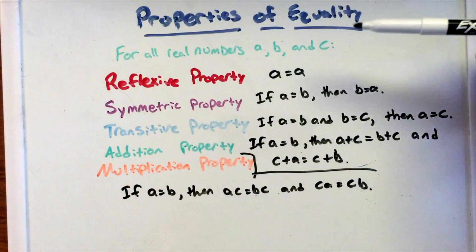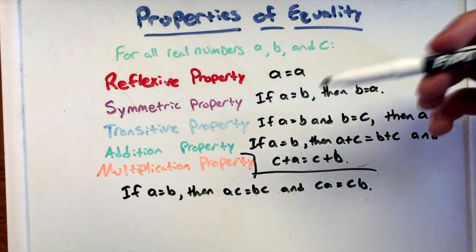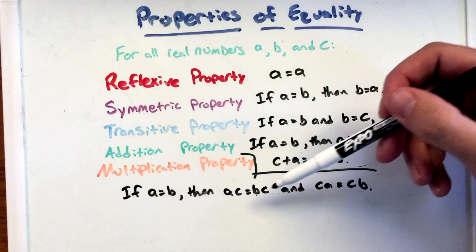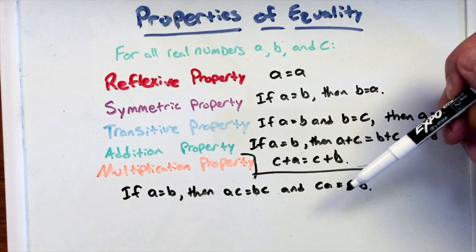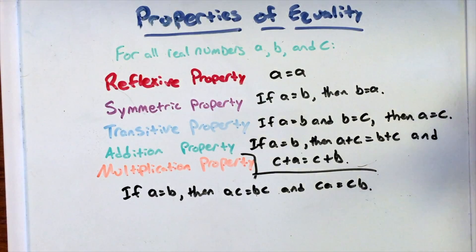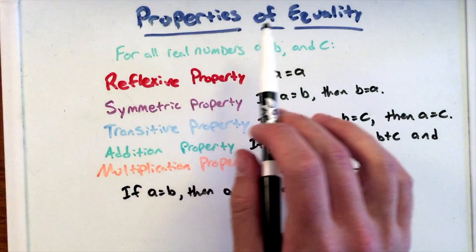So A times C equals B times C, and C times A equals C times B. I hope you enjoyed this video - this is the properties of equality.